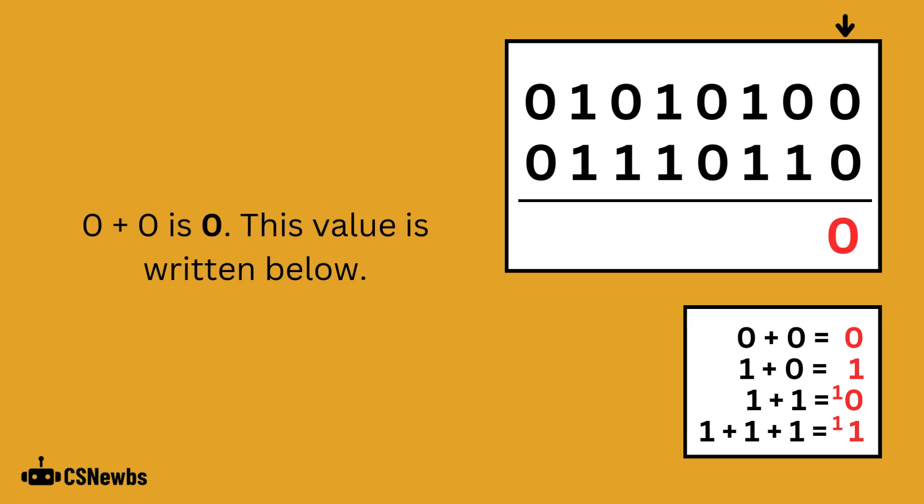0 plus 0 is 0, and this value is written below the other two binary values. In the next column, 0 plus 1 is equal to 1.